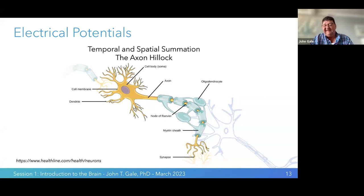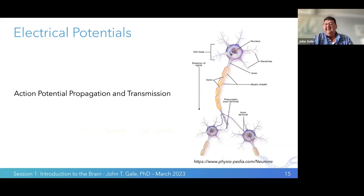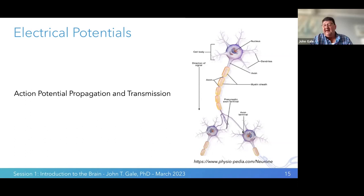A sufficient number of excitatory potentials in the cell body area will propagate to the axon hillock, generate an action potential, and that potential will travel down the axon to the synapses. At the synaptic level, they release neurotransmitters to a subsequent neuron. These transmitters can be excitatory or inhibitory, so the action potential traveling down can cause the cells it's attached to either fire less or potentially fire more. This is the basic structure of the brain: one neuron connected to multiple neurons, which then transmit to further neurons.